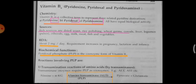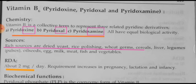Burning foot syndrome can be prevented by taking sufficient pantothenic acid. Next is vitamin B6, which is also called as pyridoxine, pyridoxal or pyridoxamine — three different forms are available. Vitamin B6 is a collective term to represent three related pyridine derivatives: pyridoxine, pyridoxal and pyridoxamine. The aldehyde form, the amine form, and all are having equal biological activity.